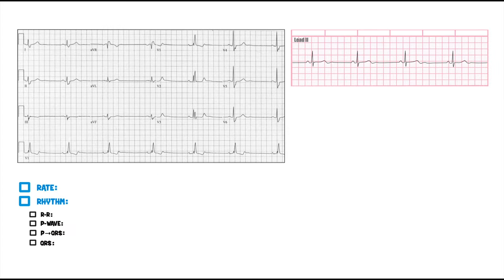Let's go ahead and calculate the rate and rhythm for this EKG. I like the easy way — let's add the R waves up: 1, 2, 3, 4, 5, 6, 7. So that's about 7 R waves. Take 7 R waves and multiply that by 6. That gives us 42 — so there's 42 beats per minute.